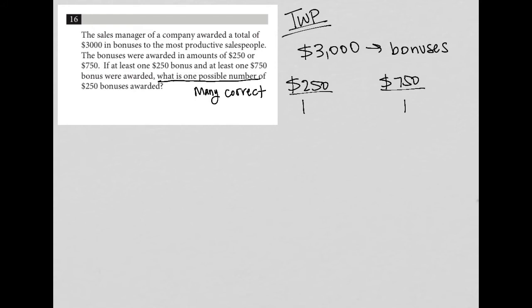So if I have one person getting $250 and one person getting $750, I'd have a total of $1,000. This is how I'm choosing to solve this question. I know that I want to get up to $3,000, so I've only given away $1,000 at this point, meaning I have $2,000 left to give out. The question does not tell me how many people are awarded the bonuses.